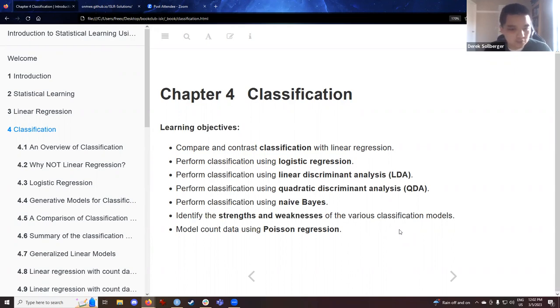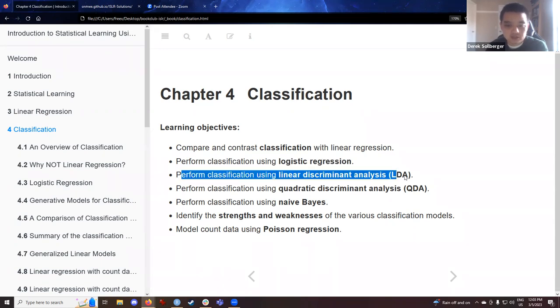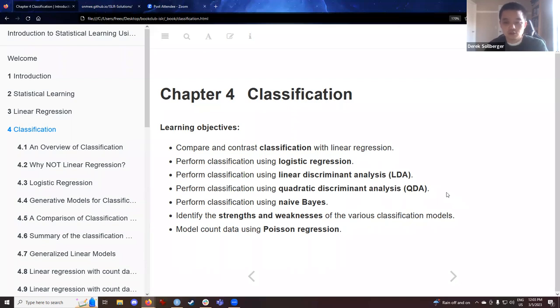I thought what would be useful is to just quickly review some of our learning objectives. We are going to compare and contrast classification with linear regression. We have looked at and now we're going to perform the logistic regression, similarly for linear discriminant analysis, quadratic discriminant analysis, and maybe at least think about some of naive Bayes.